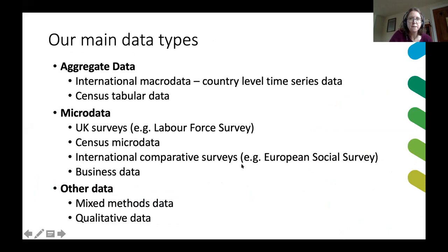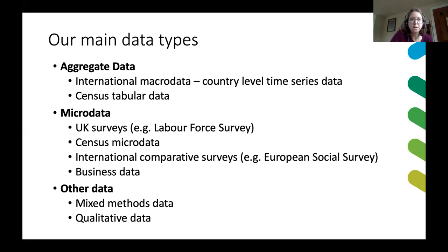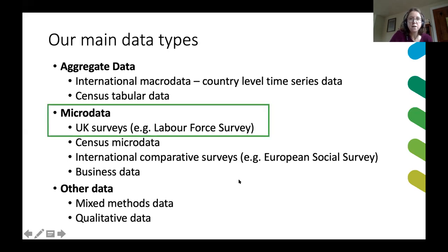The main types of data we hold come in different forms. We have aggregate data — the sort you'd get from census data or some of the international data we have — and micro data, meaning data about individuals. A lot of that comes from surveys, and we also have mixed methods data and quite a lot of qualitative data. But today I'm focusing on the survey data we hold, the micro data that comes from UK surveys.